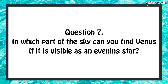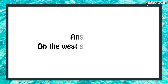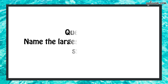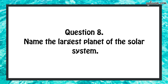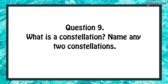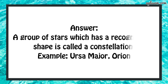Question number 7: in which part of the sky can you find Venus if it is visible as an evening star? Answer: on the west side of the sky. Question number 8: name the largest planet of the solar system. Answer: Jupiter. Question number 9: what is a constellation? Name any two constellations. A group of stars which has a recognizable shape is called a constellation. Examples are Ursa Major and Orion.